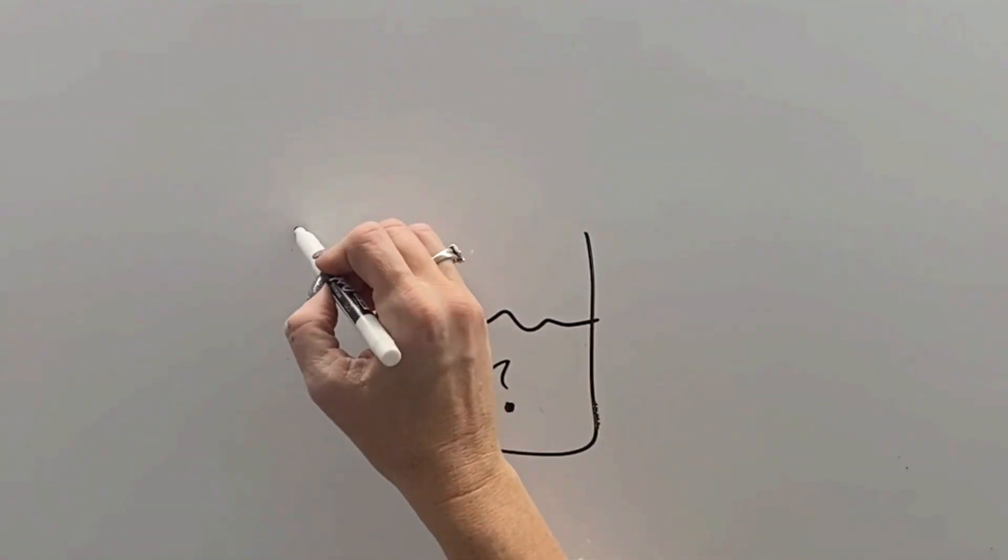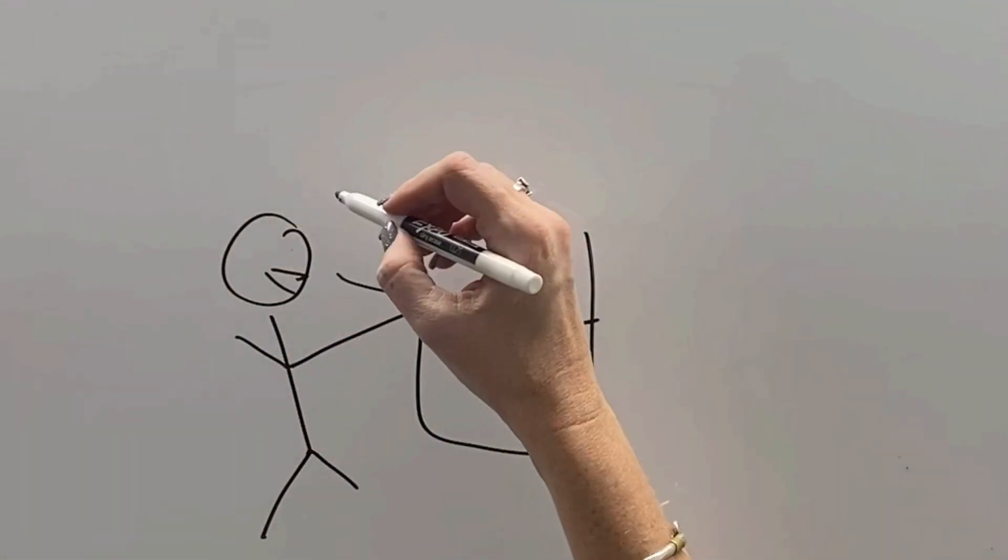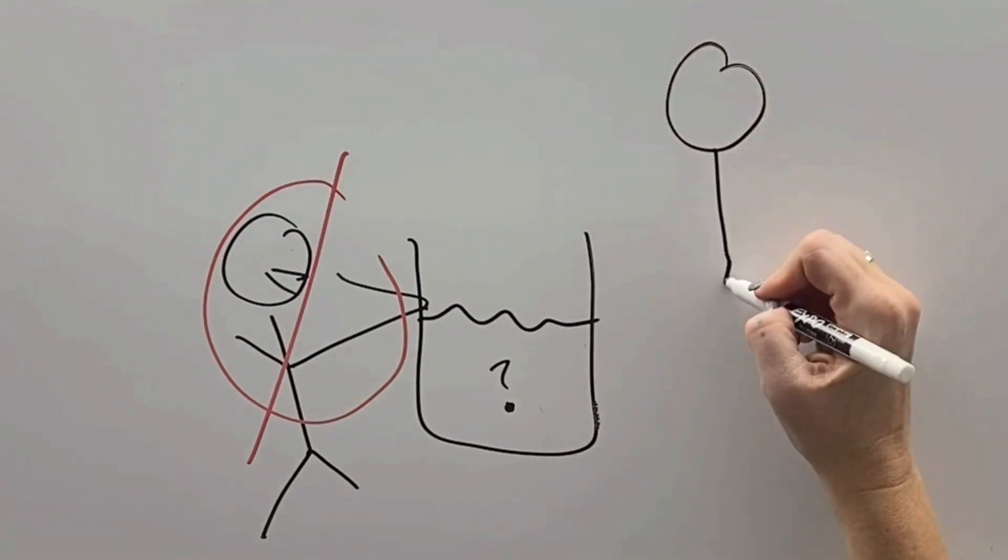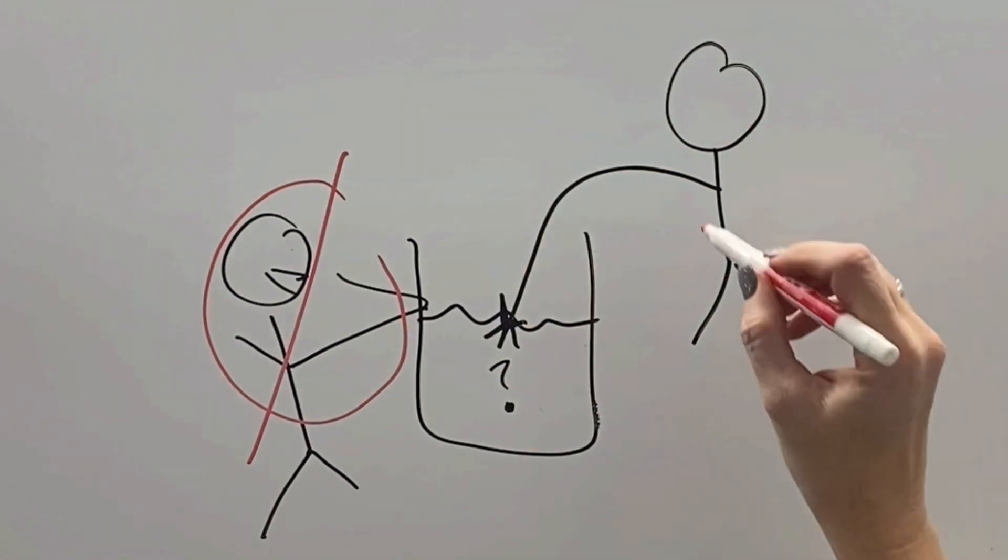And so how do we know if something is an acid or a base? Do we drink it? No. Do we touch it? No, of course not.